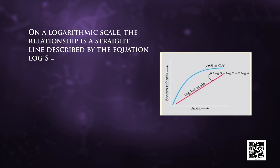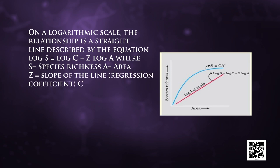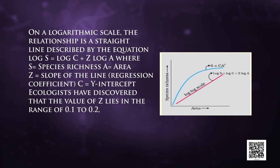On a logarithmic scale, the species-area relationship is a straight line described by the equation: log S = log C + Z log A, where S stands for species richness, A stands for area, Z stands for the slope of the line or regression coefficient, and C stands for the y-intercept. Ecologists have discovered that the value of Z lies in the range of 0.1 to 0.2, regardless of the taxonomic group or the region — whether plants in Britain, birds in California, or mollusks in New York State.